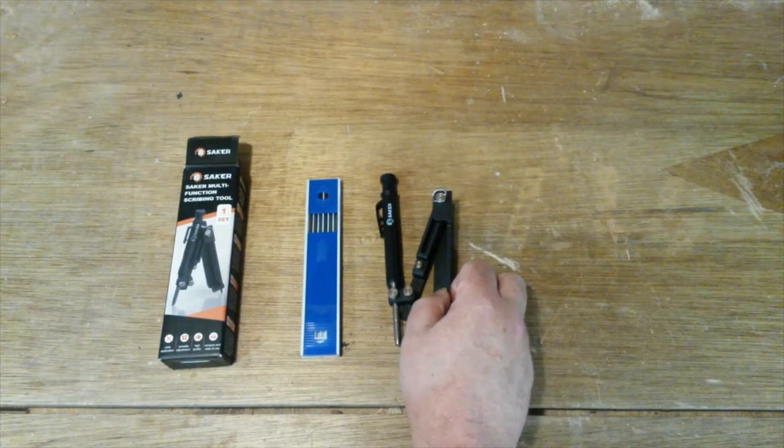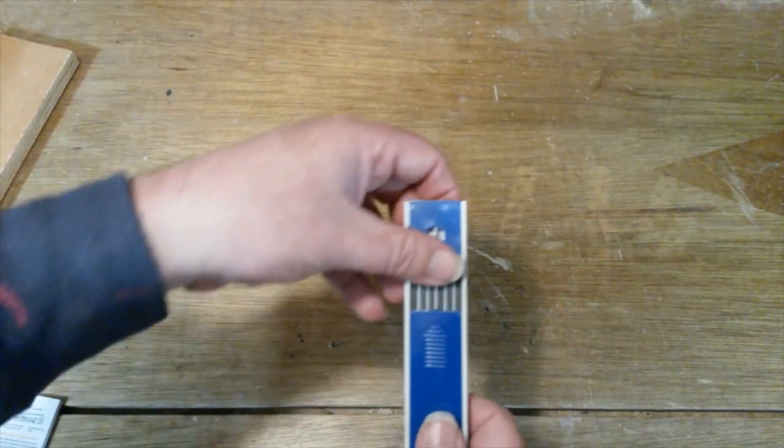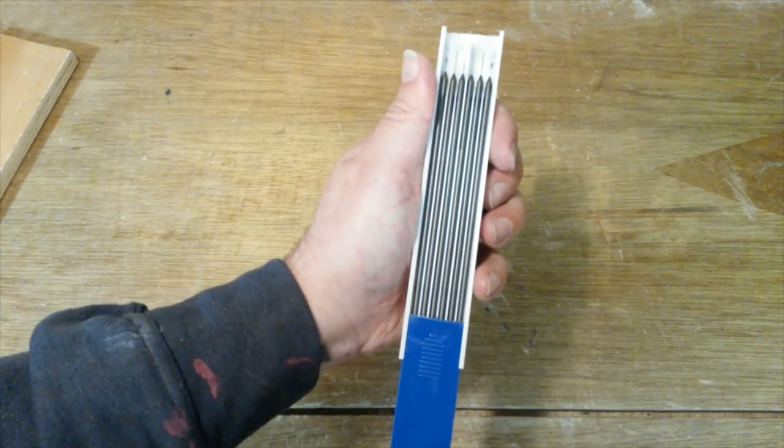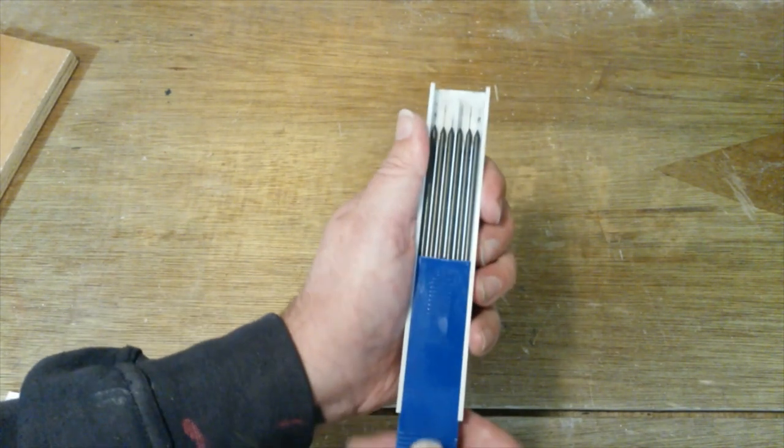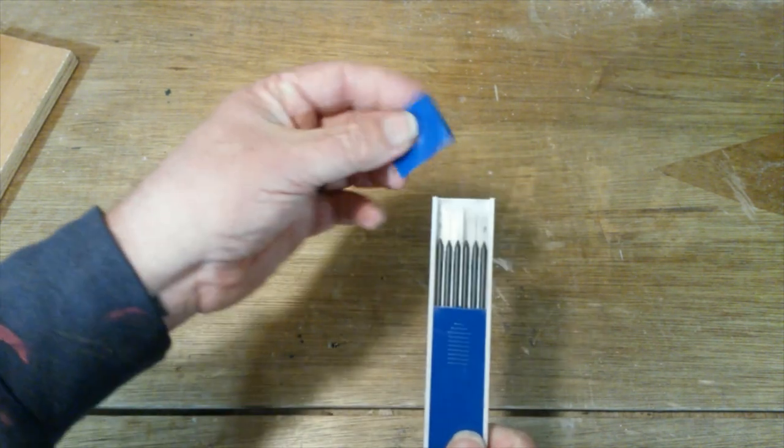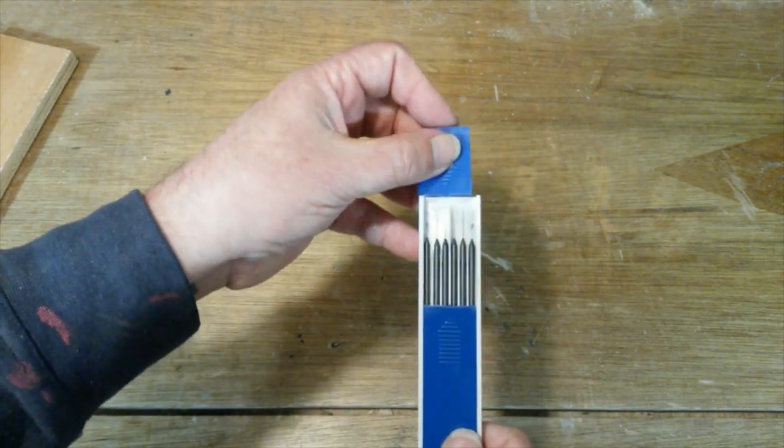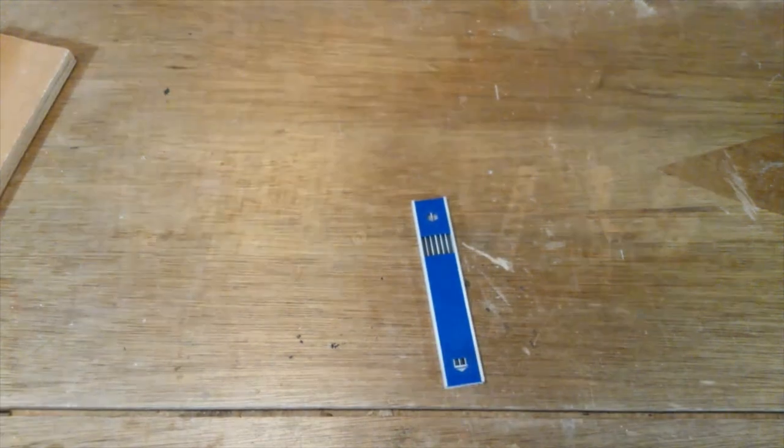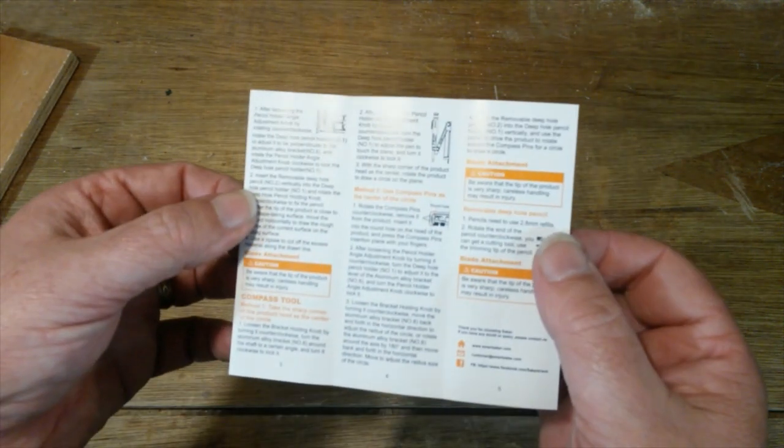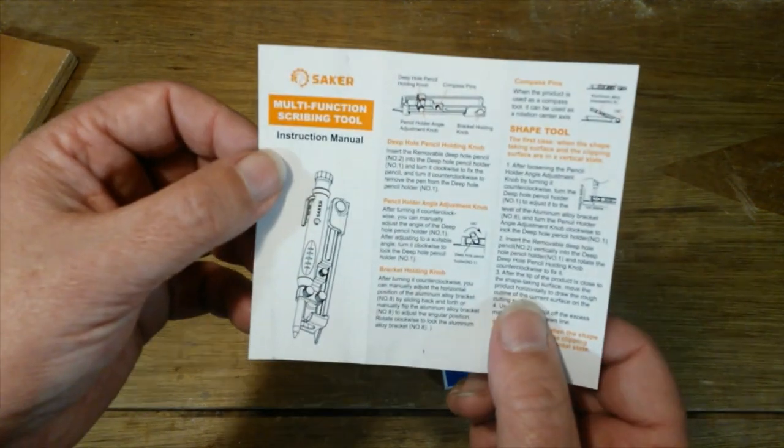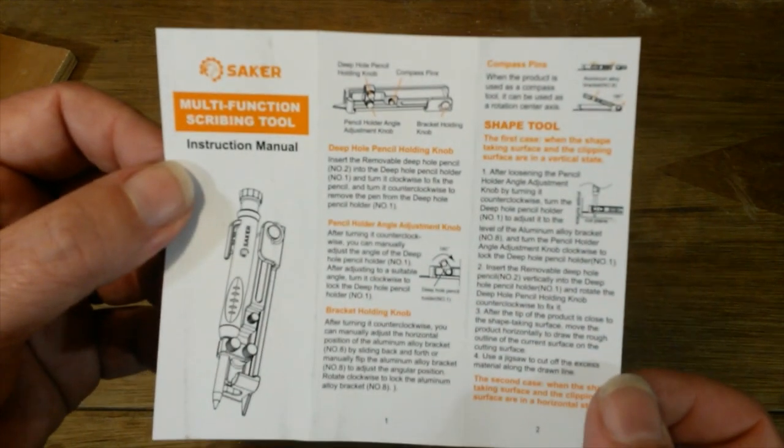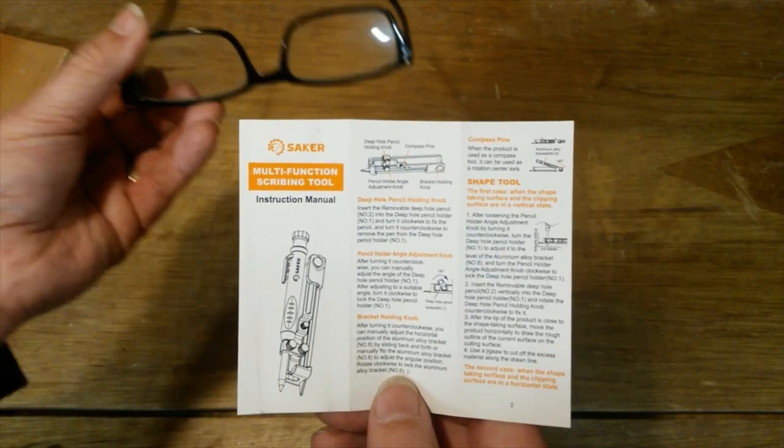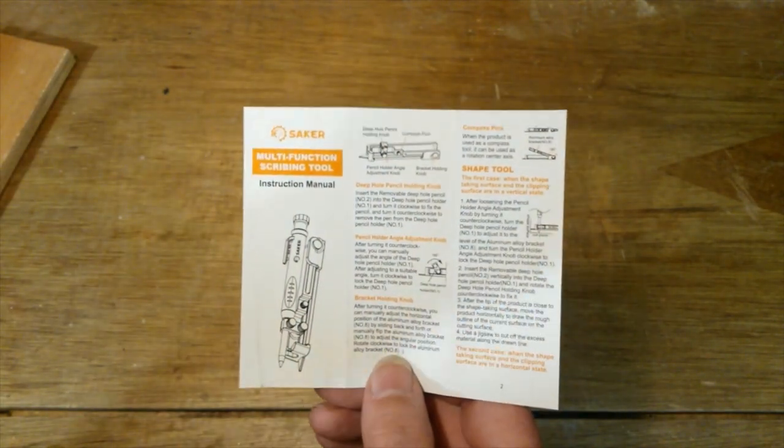Well that's it assembled. You get six replacement pencil leads, which is really good, so the last thing you want to do is run out. There's your instruction. Lots of small writing, and if you're like me, you can't read them without your glasses, otherwise it's all blurry.